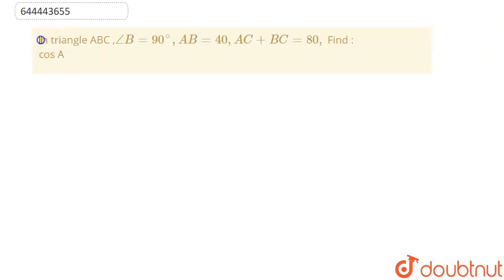We are given here the question that in triangle ABC, angle B equal to 90 degrees, AB equal to 40, AC plus BC equal to 80, find cos A.